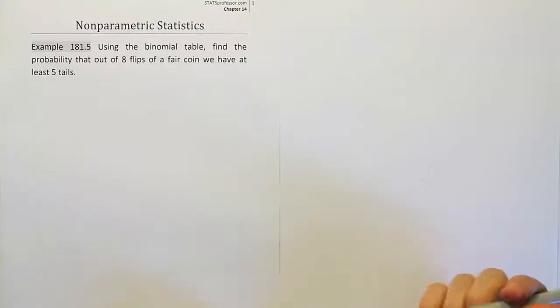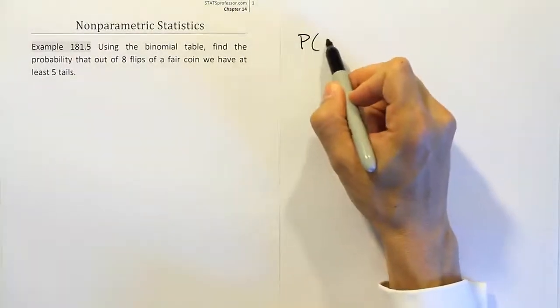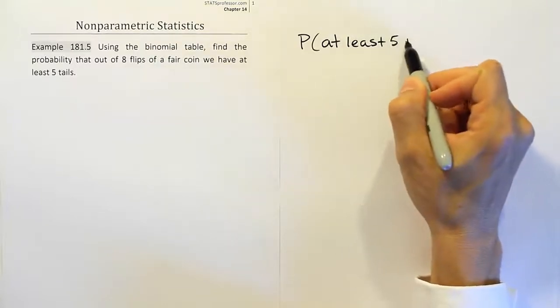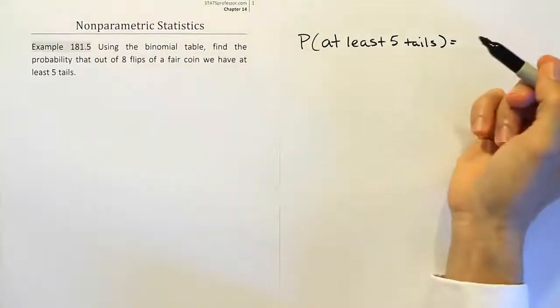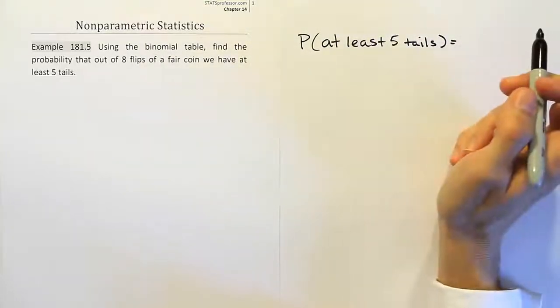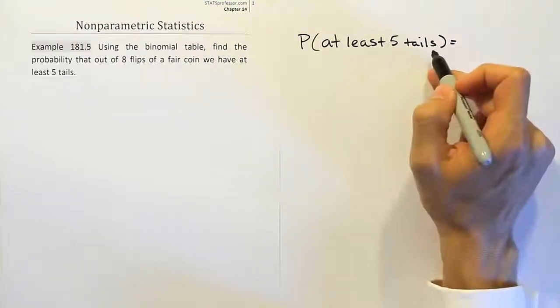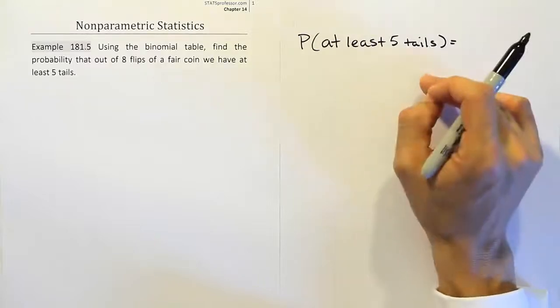So we're looking for the probability of having at least five tails. They mentioned that it's a fair coin, which tells us the probability of being tails is 50%. So the first thing I want to do is start out with what they're asking us here. At least five means what?